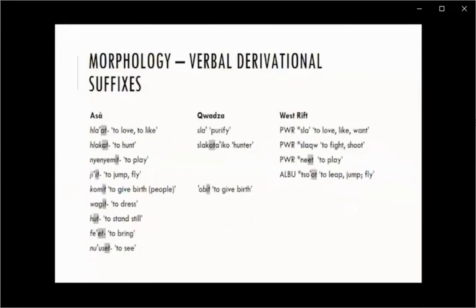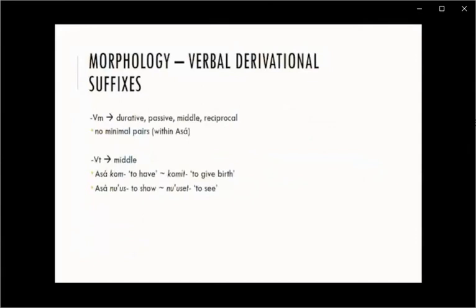Then there is vowel-T, which usually is the middle in Cushitic, and the same issues arise. For example, tla'at has a suffix and means to love or to like in Asa, but Kwadza does not have a suffix and means to purify, while Proto-West Rift also lacks the suffix but means to love or to like. Some translations do really fit the middle, like wagite, meaning to dress. Asa does have some interesting minimal pairs: kom means to have, and komit means to give birth for people. And nus means to show — which makes sense because us is a causative suffix — but with the addition of the middle et, the meaning changes to to see.